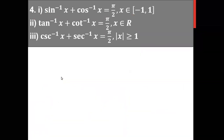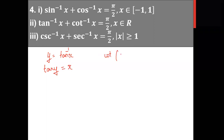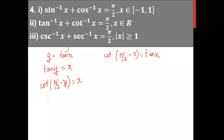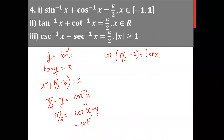For the second property, take y equal to tan inverse x, so tan y equals x. We know that cot of (pi/2 minus x) equals tan x. So cot(pi/2 minus y) equals x. Applying cot inverse to both sides: pi/2 minus y equals cot inverse x, so pi/2 equals cot inverse x plus y. Since y equals tan inverse x, we get pi/2 equals cot inverse x plus tan inverse x. The third one — cosec inverse x plus sec inverse x equals pi/2 — is left as homework.